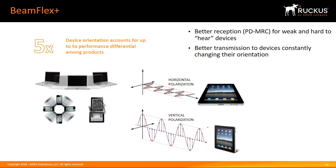BeamFlex Plus is the receive function of the BeamFlex antenna. Whereas BeamFlex provides the transmissions made by a Ruckus access point, BeamFlex Plus refers to the improved reception of signals transmitted by wireless clients. The BeamFlex antenna array is designed to minimize the amount of internal electronic noise. This reduction, combined with the increasing sensitivity of the BeamFlex antenna, means clients are able to transmit at higher data rates, making the wireless LAN operate more efficiently.